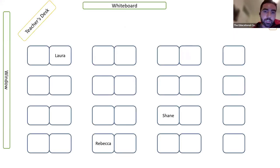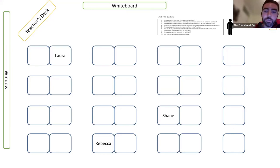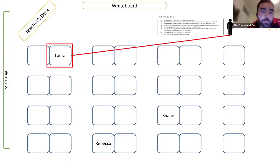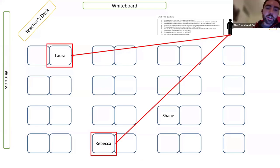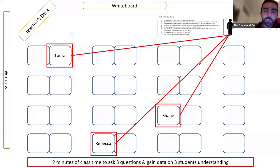In practice after explaining primary economic activities in Brazil, I cold call a few questions: what were the two types of agricultural activities in Brazil — Laura; on average how many cattle are on a commercial cattle farm — Rebecca; how many people are employed in coffee plantations in Brazil — Shane. In about two minutes of class time I've asked three questions and gained data on three students' understanding, which is very efficient.